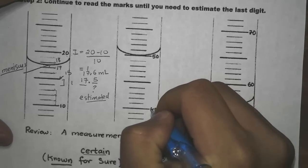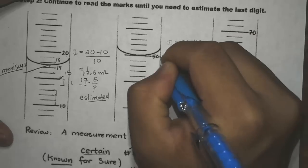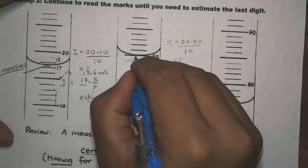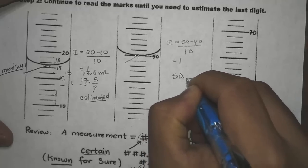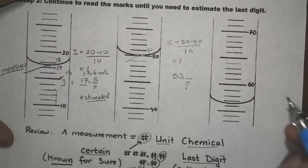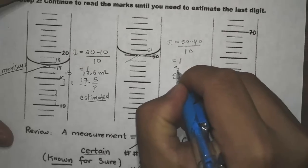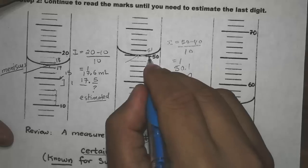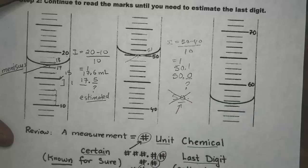Let's try another example. Here I have the same graduated cylinder, now with labeled values 40 and 50. The value of one increment is (50 − 40) ÷ 10 = 1. We know for sure the reading is at 50 — that's where we read at the meniscus level. But the question is: what is the estimated digit? It is about 50, so this must be 50.0 or 50.1. The answer cannot be just 50, because we must end at the estimated digit.